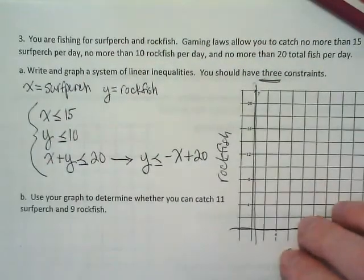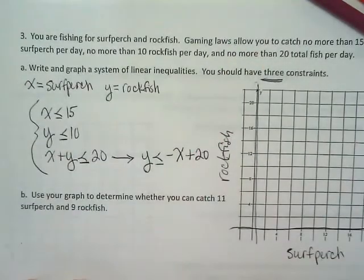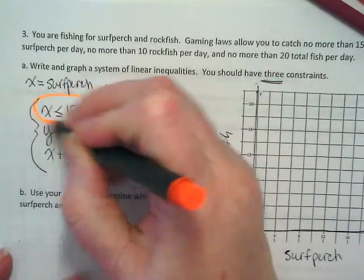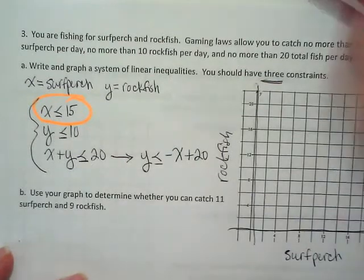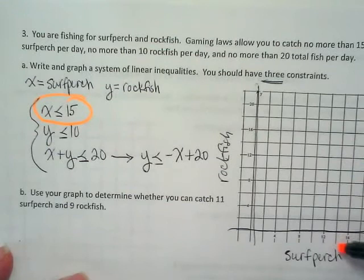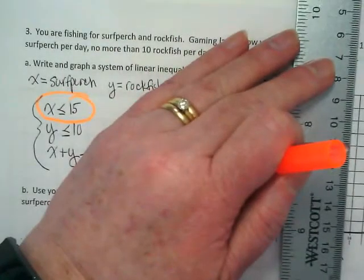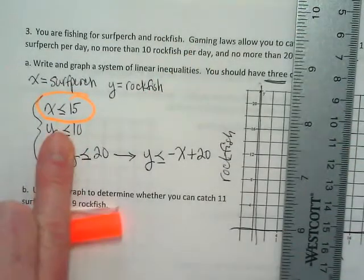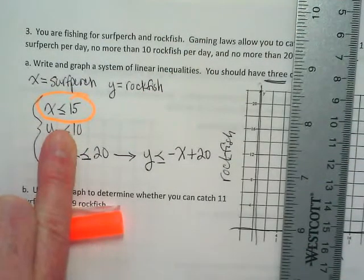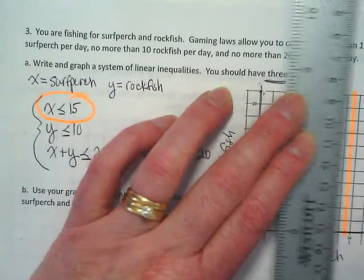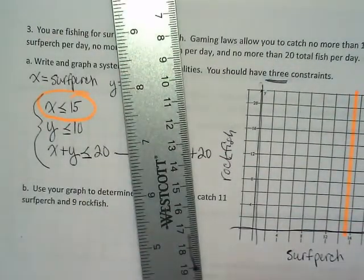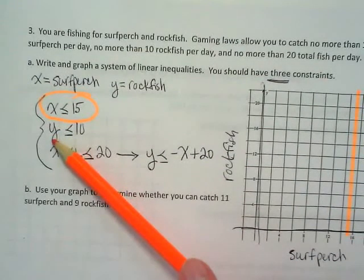I'm going to take our first inequality, x is less than or equal to 15. If it's x, it's undefined. Where's the line for 15? This is 12, 14, 16, so it's going to be halfway between 14 and 16. It's less than or equal, so it's going to be what kind of line? Solid. And it's less than or equal to, so we shade to the left.